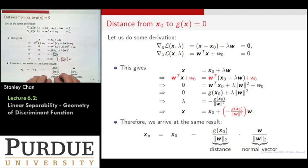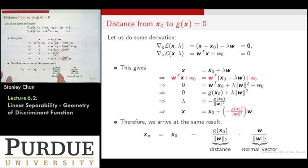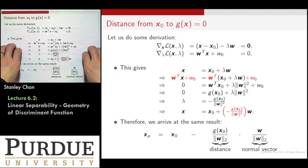We'll use these results on several occasions. First, to define separating hyperplanes and classifiers, giving us a way to measure how far data points are from the plane. Second, to define support vector machines, where we maximize the margin. Third, when studying adversarial attacks — when you try to move a data point from one class to the other, you need to travel across that gap, which is the reverse of this problem.